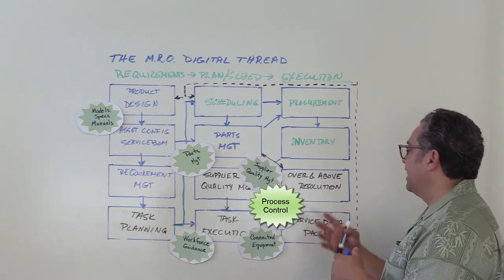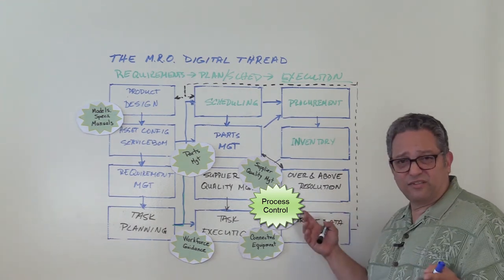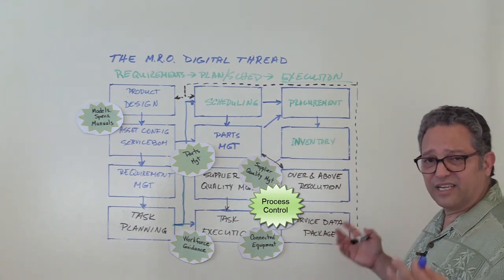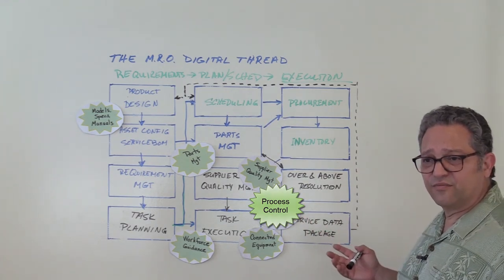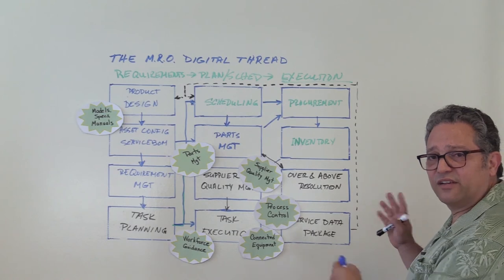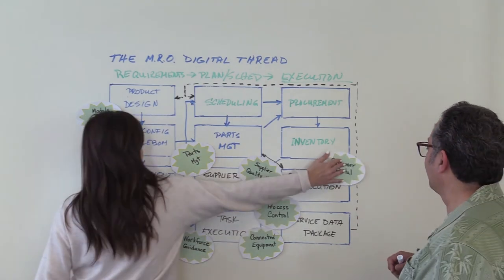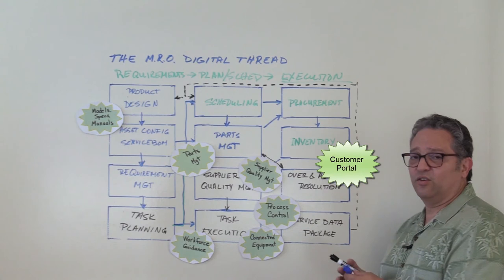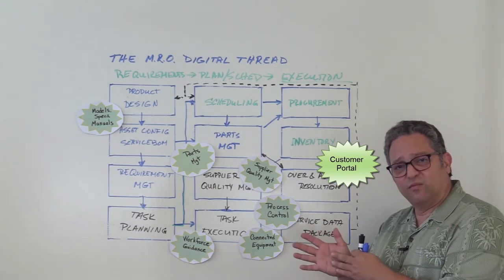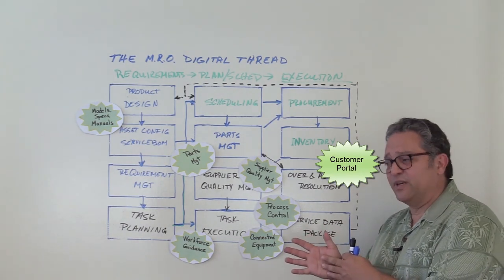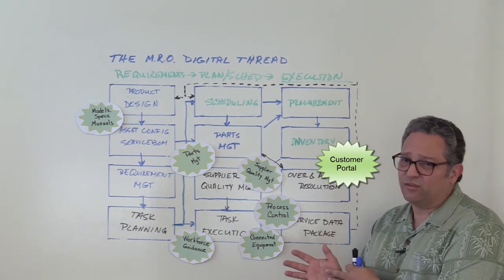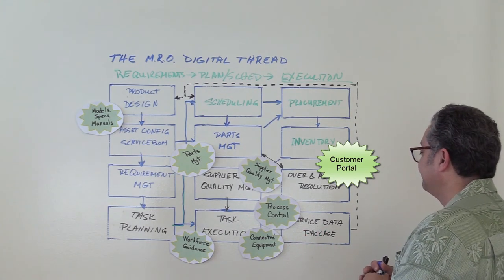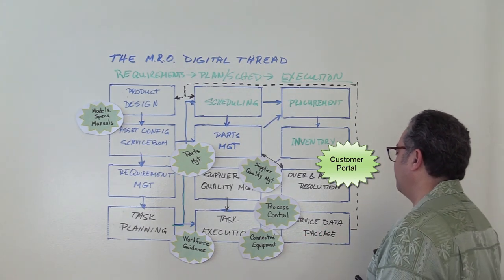When we find an issue that requires additional scope beyond the maintenance plan, we need a way to include or exclude additional work scope. That additional work scope may need customer approval, and we handle that through our customer portal, which surfaces the over and above work so the customer is not surprised when they receive the bill.